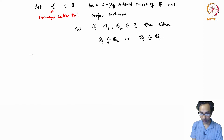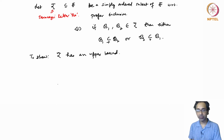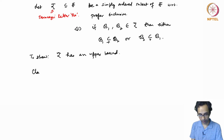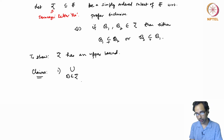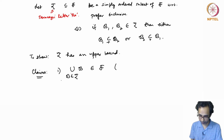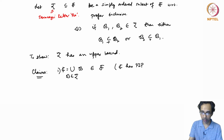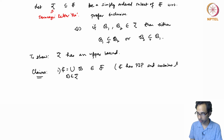We need to show that ρ has an upper bound, which will show that every simply ordered subset has an upper bound. The first claim is that the union C of all collections belonging to ρ itself belongs to the collection of collections — meaning C has the finite intersection property and contains the collection A.